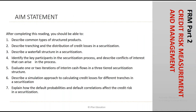Let us go through the aim statement. After completing this reading, we should be able to describe the common types of structured products, describe the tranching on the distribution of credit losses in a securitization, describe the waterfall structure in a securitization, identify the key participants in the securitization process, and evaluate one or two iterations of interim cash flows in a three-tiered securitization structure. We should also describe a simulation approach for calculating credit losses for different tranches, and explain how default probabilities and default correlations affect credit risk in a securitization — this will mostly be tested conceptually.